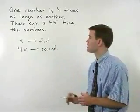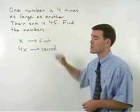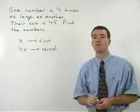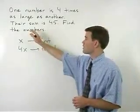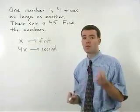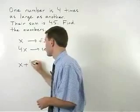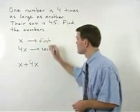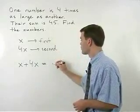Now let's look at the second sentence. Their sum is forty-five. The second sentence will tell you how you're going to set up your equation. Their sum, if our variables are x and four x, will be x plus four x. Is means equals forty-five.